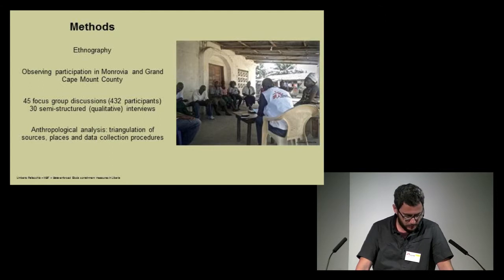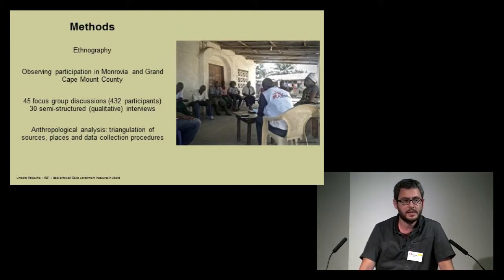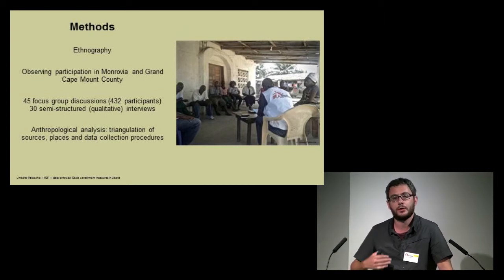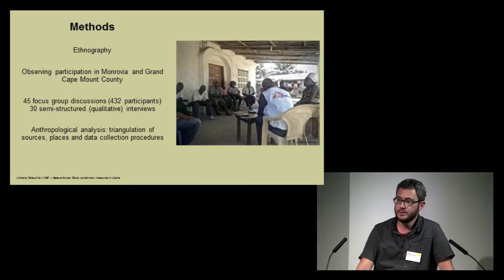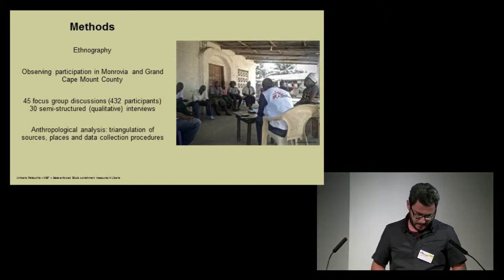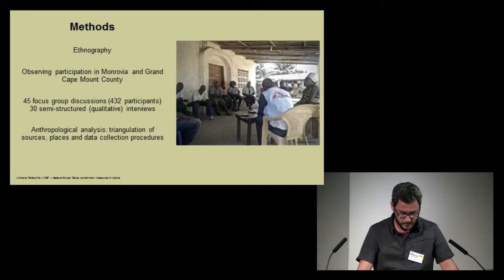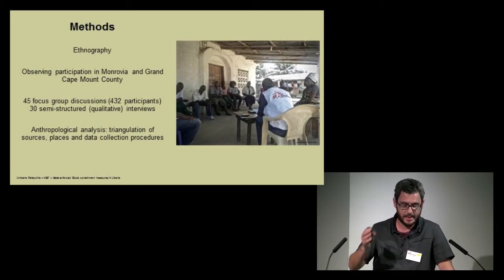The methodology was ethnographic, aimed to understand local perceptions and social practices. I personally carried out participant observation with the help of two local assistants in eight areas in Monrovia and seven villages in Grand Cape Mount County. Focus group discussions and individual qualitative interviews were also conducted, grasping all social strata of Liberian population. Research locations were selected according to different criteria: number of active cases per area, socio-demographic dimensions, presence of a market, and rural-urban differences. Data was analyzed through a social and medical anthropological lens by triangulating different sources, places, and data collection methods.